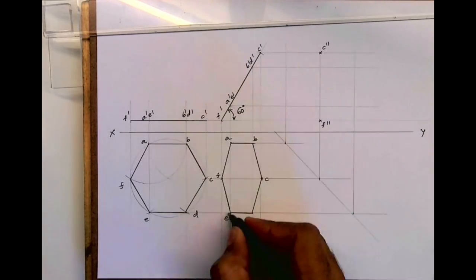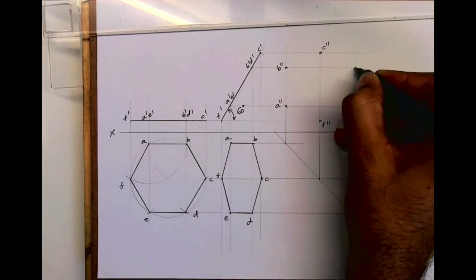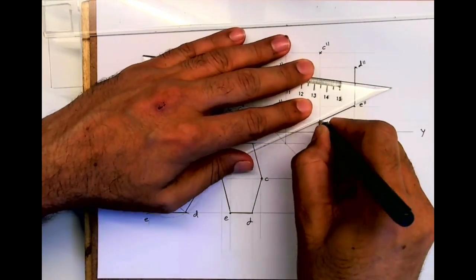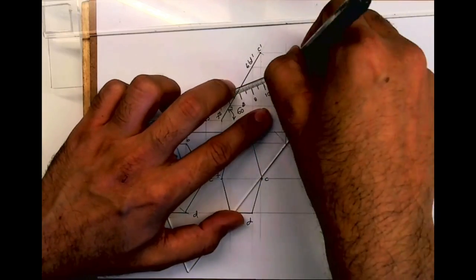Wherever we get intersections - you project from top view as well as front view - wherever they intersect, join those points to get the side view. I hope you have understood. Thank you.